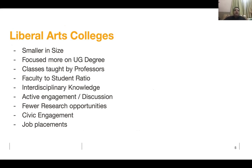Liberal arts colleges in the U.S. differ from universities in several key ways. They are really small in size — the biggest liberal arts college in the U.S. might have no more than 4,000 students. They tend to focus primarily on undergraduate education, though some like Minerva also have graduate programs. Classes are taught by professors, not graduate assistants.